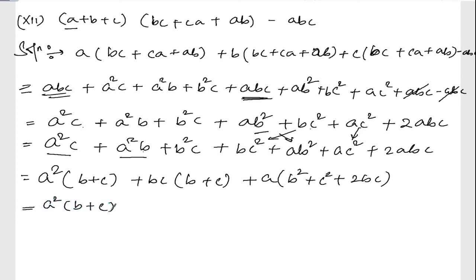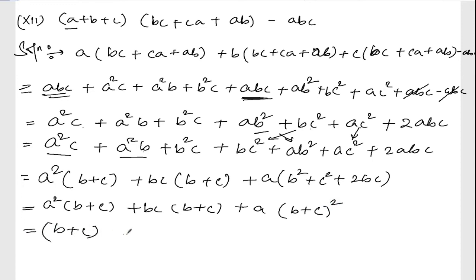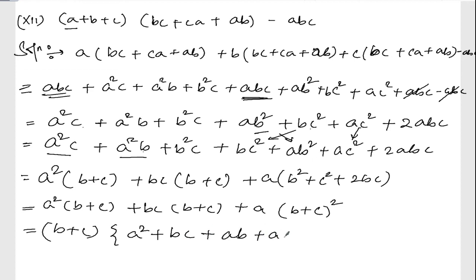So we have: a²(b + c) + bc(b + c) + a(b + c)². Now taking (b + c) as common factor, what remains is: a² + bc + a(b + c), which simplifies to a² + bc + ab + ac.